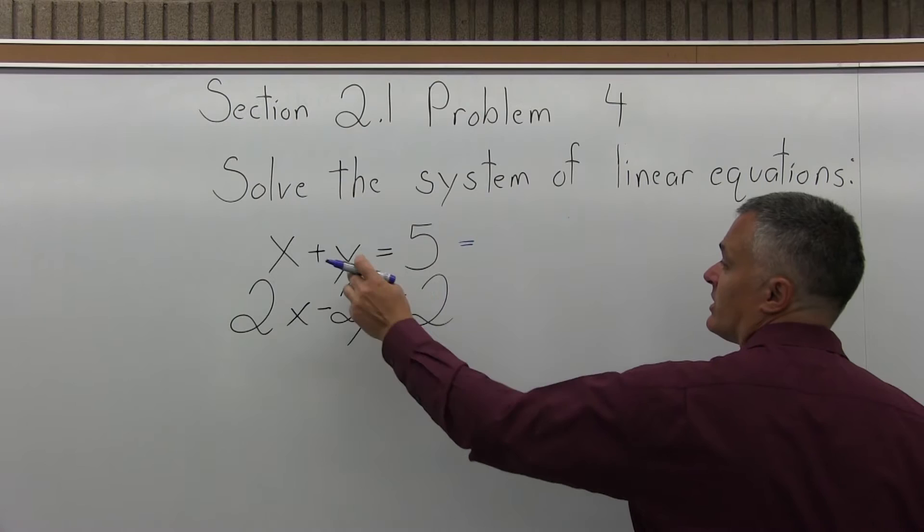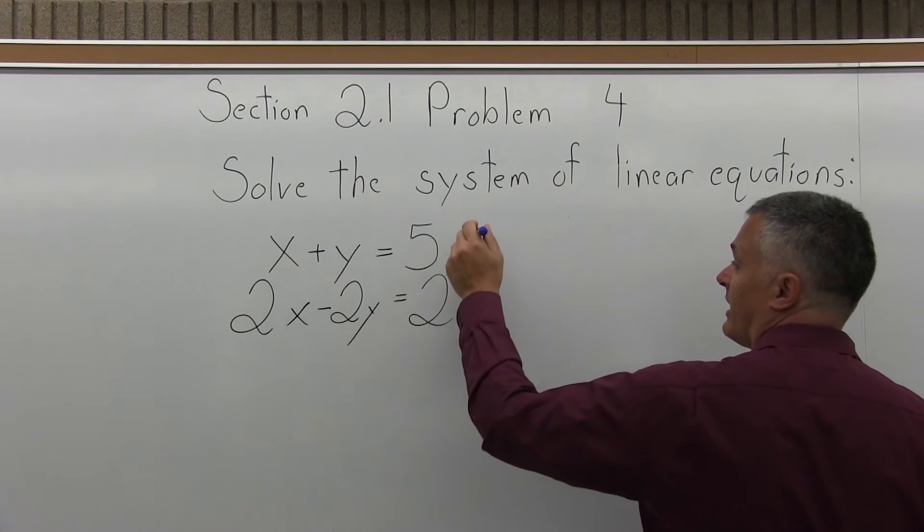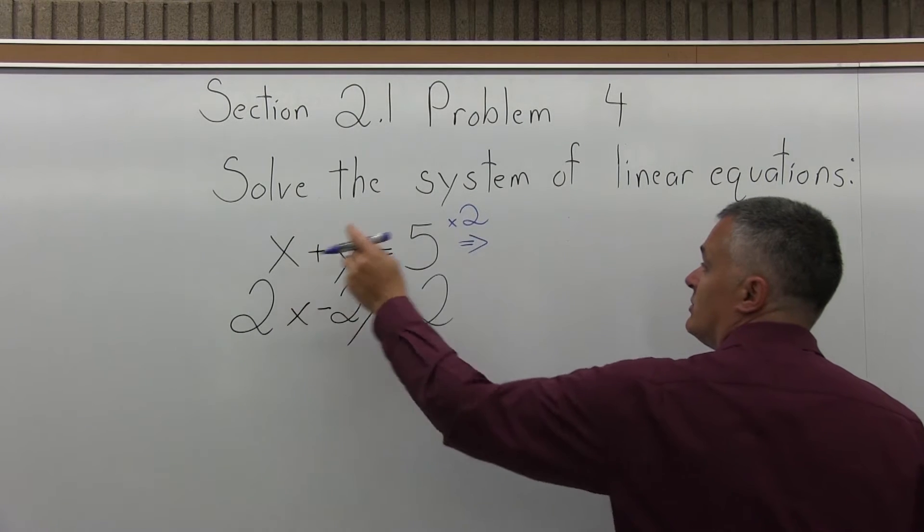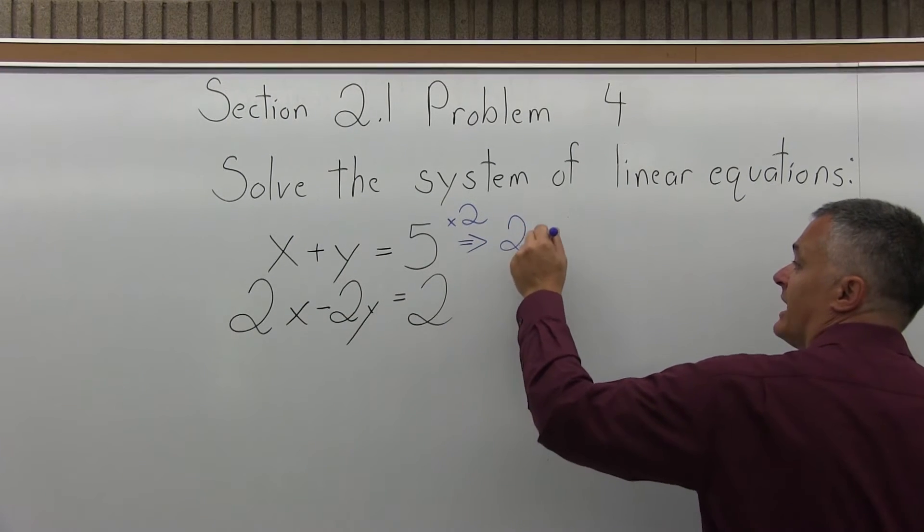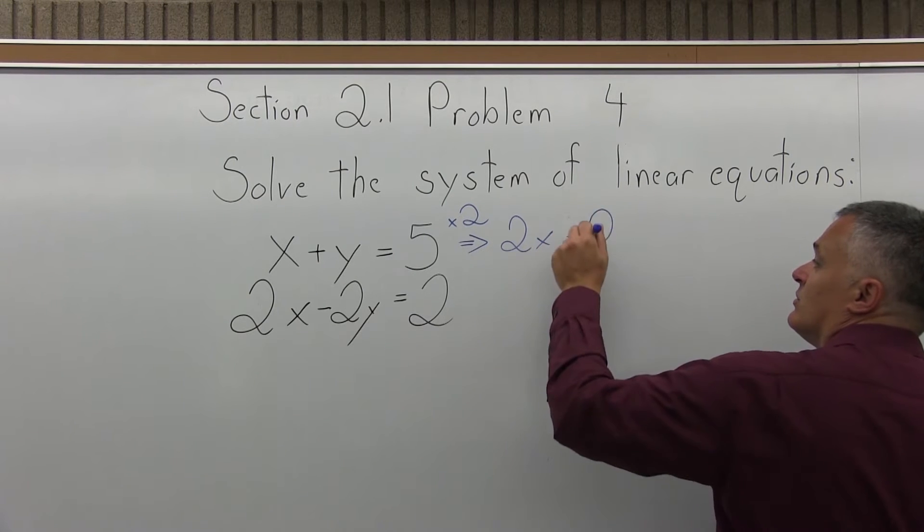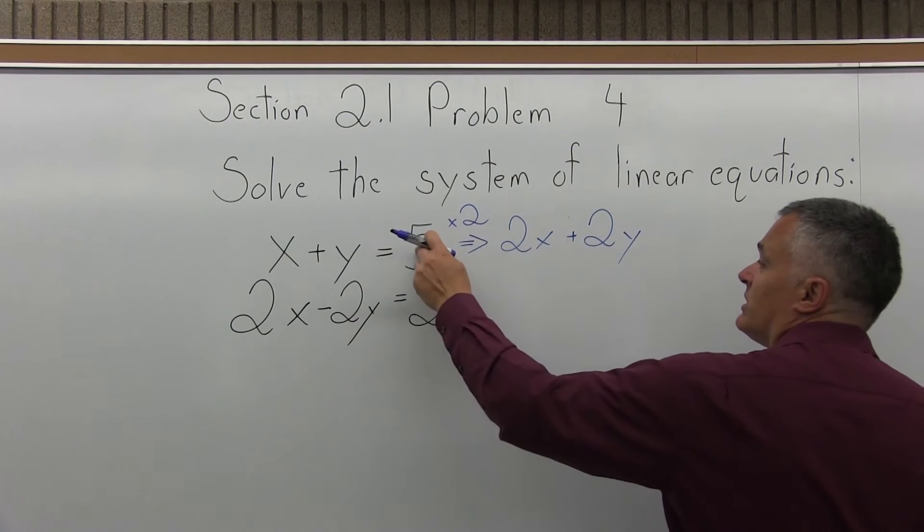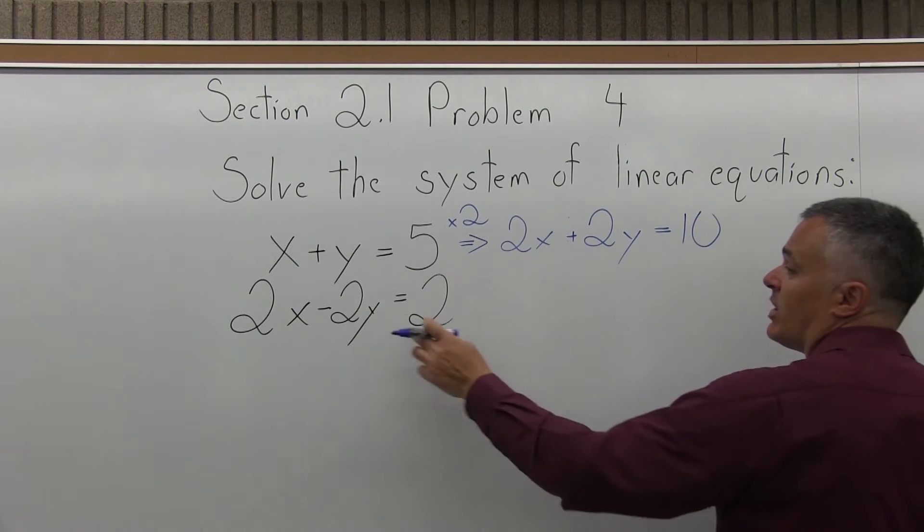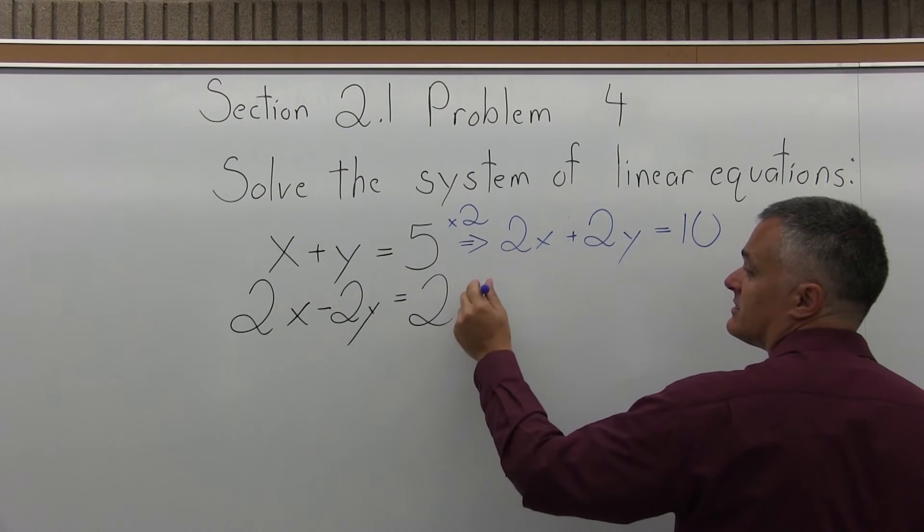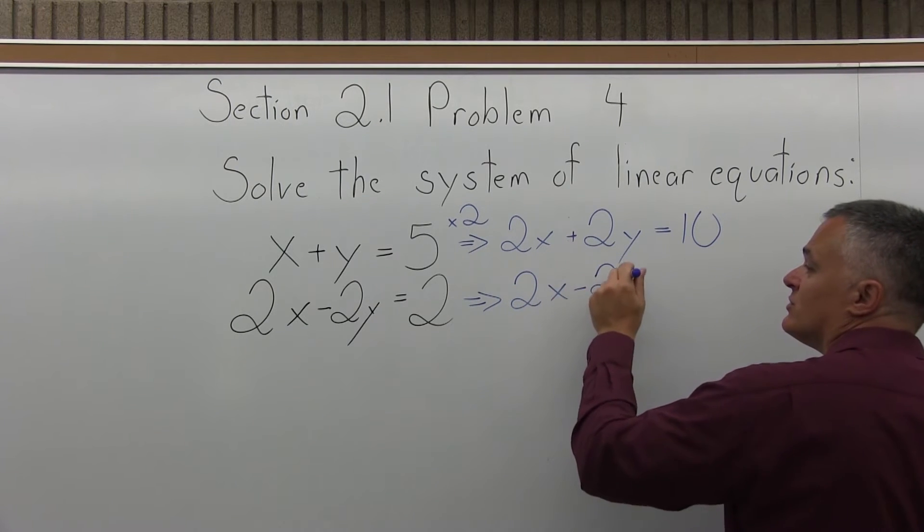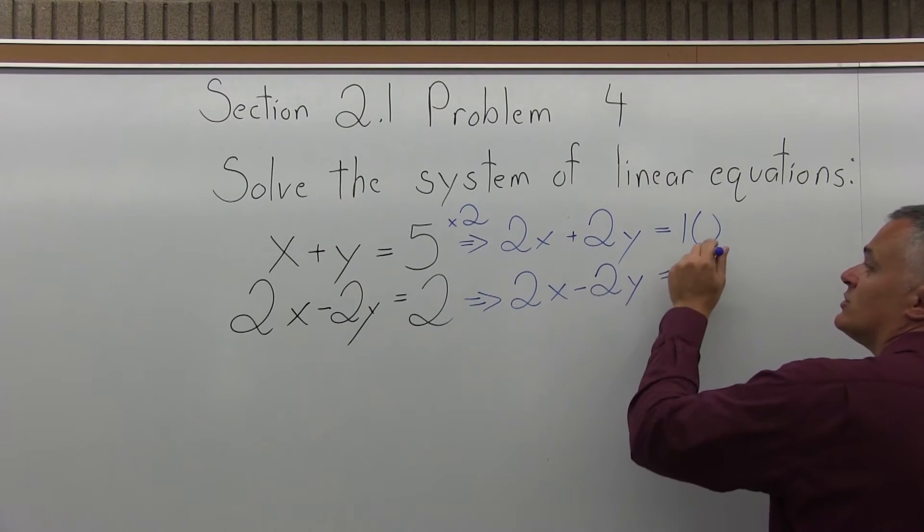So the top equation, in order to make the y into a 2y, everything will get multiplied times 2. So 2 times x is 2x, 2 times y is 2y, 2 times 5 is 10. And then the bottom equation can stay the way it is. I have 2x minus 2y equals 2.